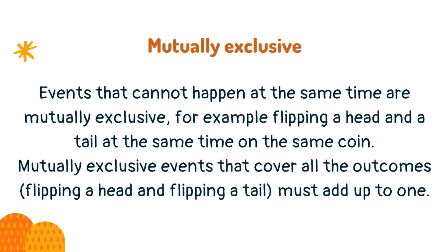Events that cannot happen at the same time are mutually exclusive — for example, flipping a head and a tail at the same time on the same coin. Mutually exclusive events that cover all the outcomes, such as flipping a head and flipping a tail, must add up to one.